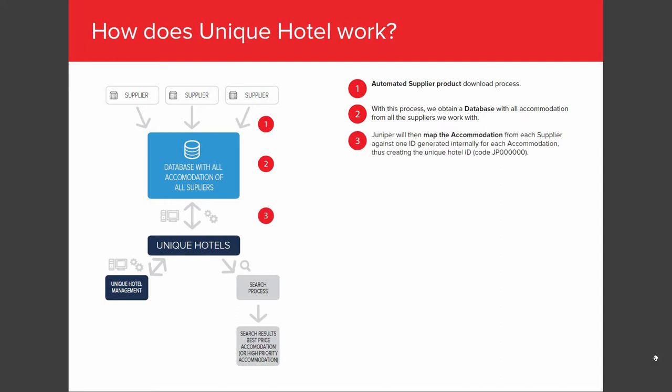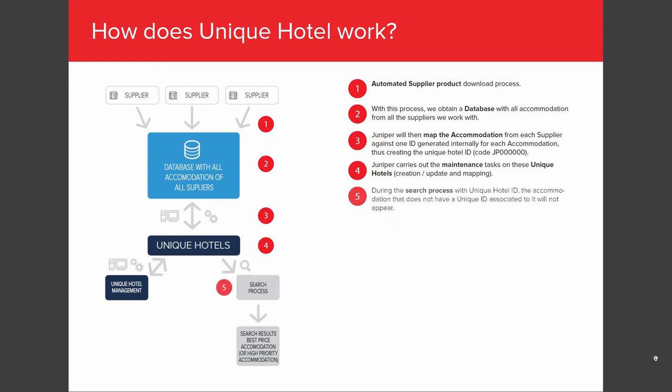Point three: once we get the data, and thanks to the Juniper algorithm, we make the mapping of all the hotels and suppliers, creating unique codes — JP000. Point four: when the process has finished, Juniper handles maintenance tasks for each unique hotel to create it, refresh it, and map it. Currently, Juniper has mapped 95% of all supplier hotels and they have their unique hotel ID. Only 5% could not be mapped due to wrong or lack of information from suppliers. Point five: hotels without a unique ID will not appear in search results. If you detect duplicate hotels, you can open a new ticket and we will map it for you.